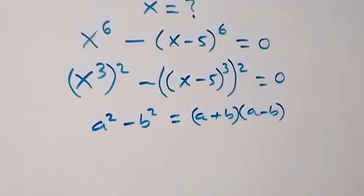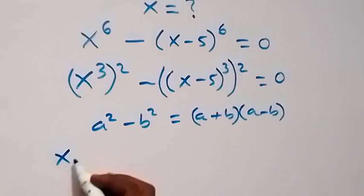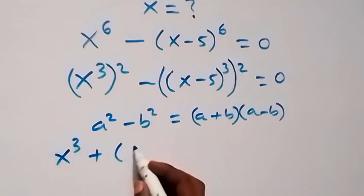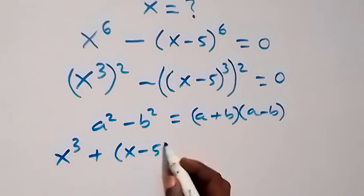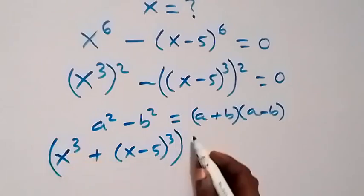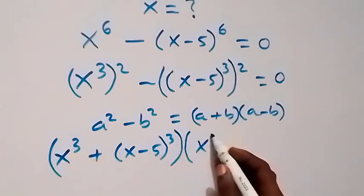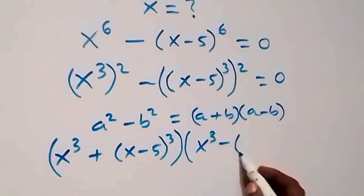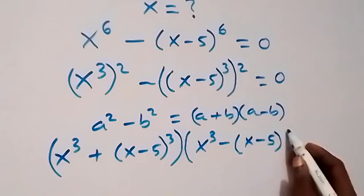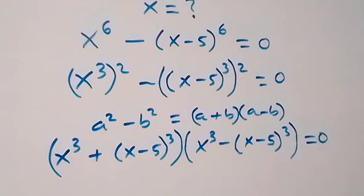So here, a is x raised to power 3, and b is x minus 5, raised to power 3. Applying difference of two squares, this becomes: x cubed plus (x minus 5) cubed, times x cubed minus (x minus 5) cubed, equals 0.